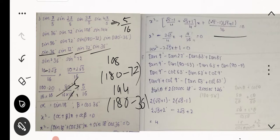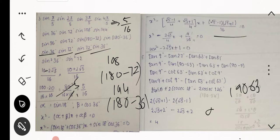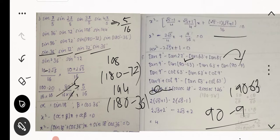Fifth question: find the value of tan(9°) - tan(27°) - tan(63°) + tan(81°). Using complementary angle identities — 90° - 63° and 90° - 9° — after simplification it becomes cosecant(18°) - cosecant(54°), where 126° = 180° - 54°. After substituting values and solving, we get 4.